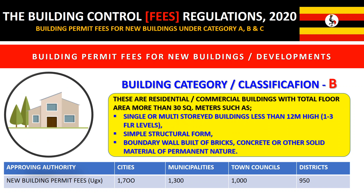Category B covers residential or commercial buildings with a total floor area of more than 30 square meters. These include single or multi-storey buildings less than 12 meters high — about one to three levels — and are of simple structure form. Boundary walls built of bricks, concrete, or any other solid material also fall under this category.